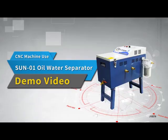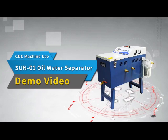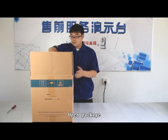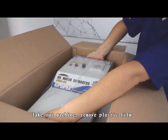C&C Machine Use 701 Oil Water Separator Demo Video. Open package, take out packing list and accessories, remove stuffing, and take out machine.